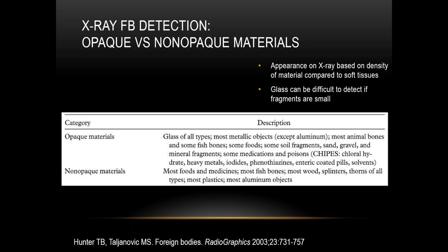Non-opaque materials include most foods and medicines, most fish bones, wood, splinters, thorns, and plastics.